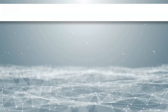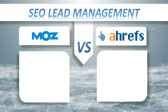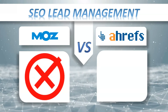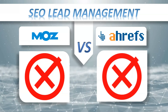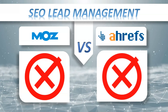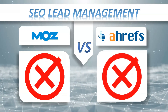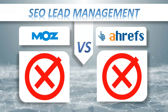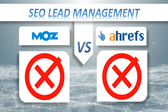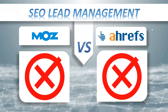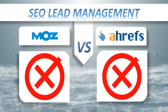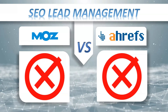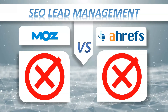Lead Management: Moz Pro — doesn't have it, Ahrefs — doesn't have it. The lead generation tool gives you a custom widget to place on your website that collects email addresses from visitors in exchange for a sample website audit. With this tool you'll be able to passively gather business leads for your online agency or service.